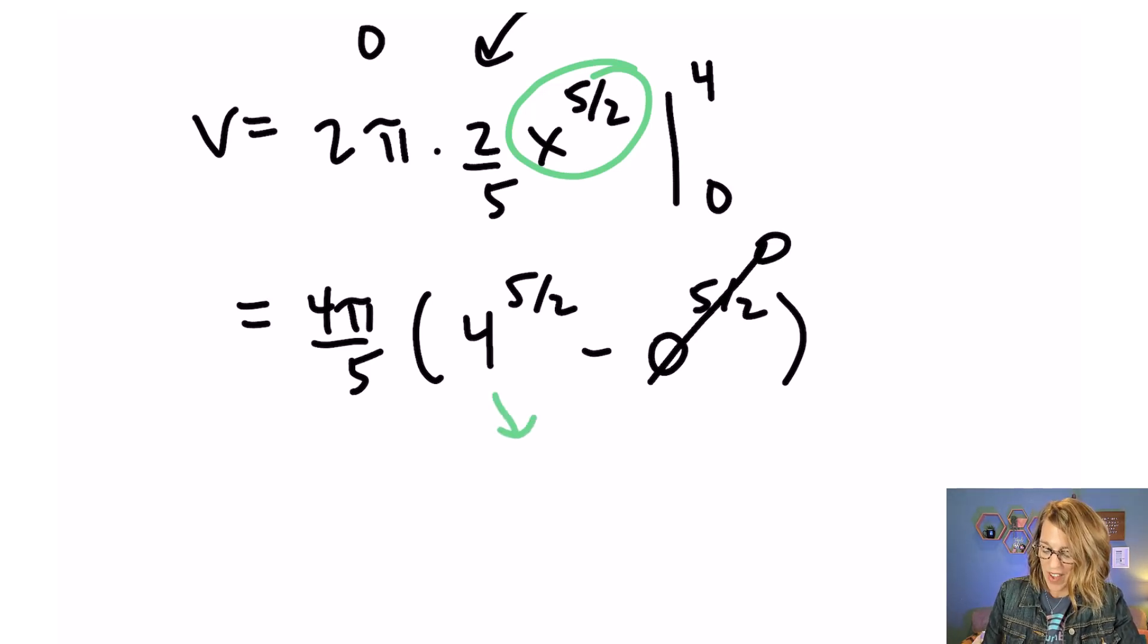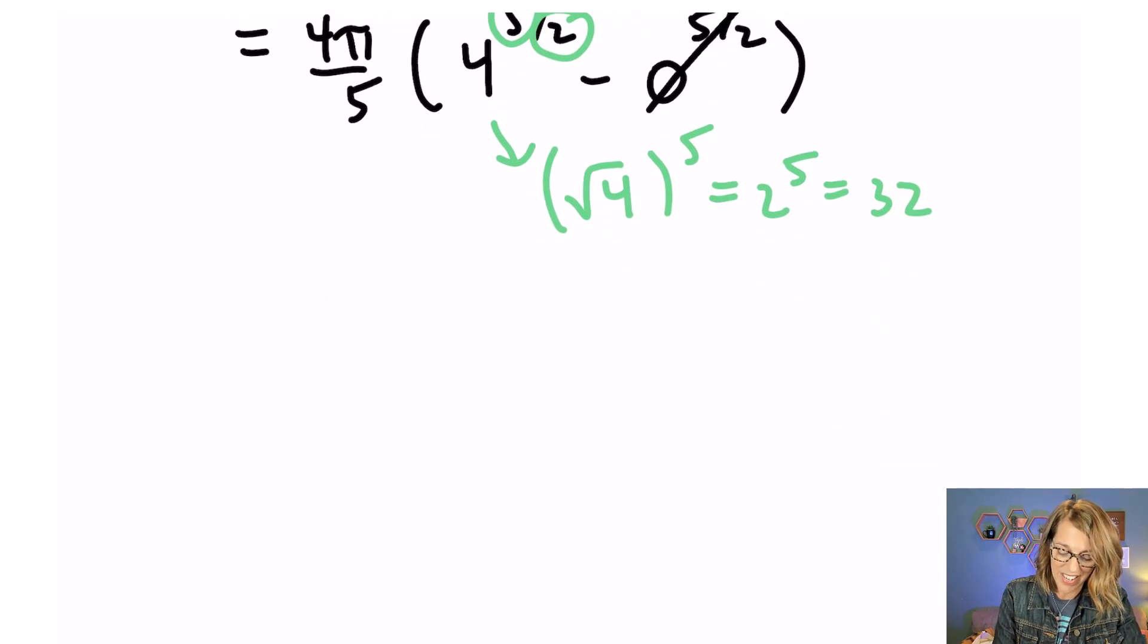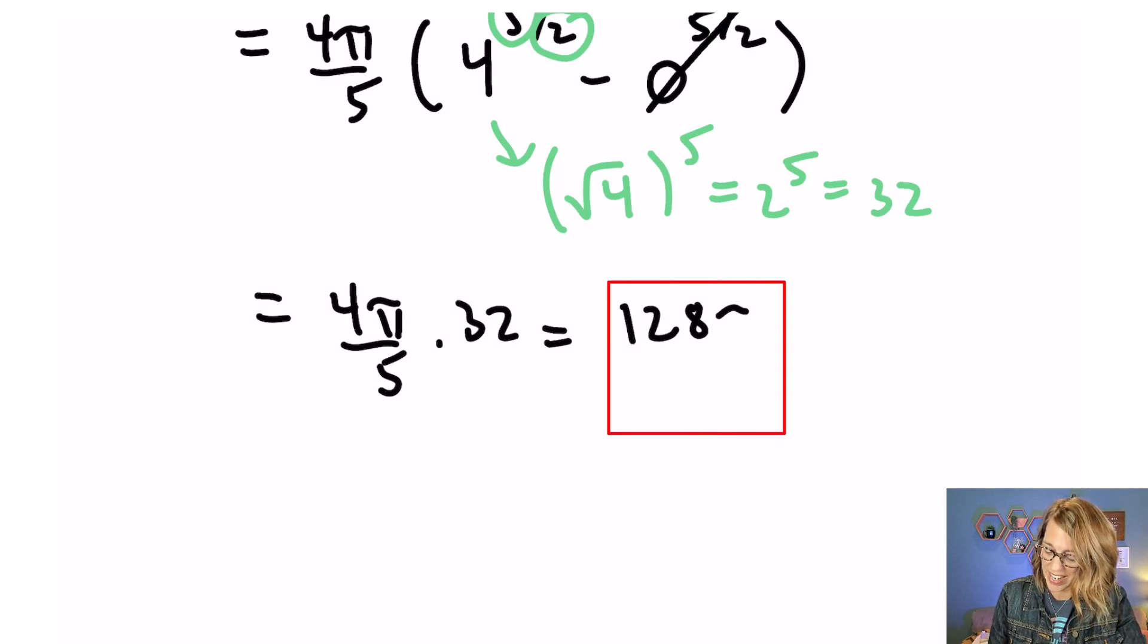So 4^(5/2). That half is really a square root. So that's going to be the square root of 4. And then I'm going to take all of that to the 5th power. Well this ends up to be 2^5 which is 32. So what I really have here is 4π/5 times 32, and that is equal to 128π/5.